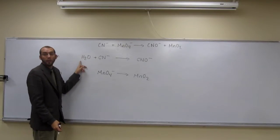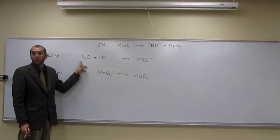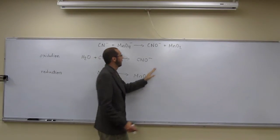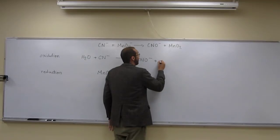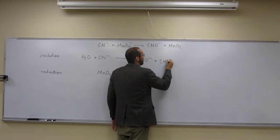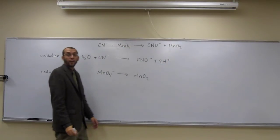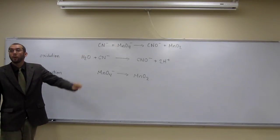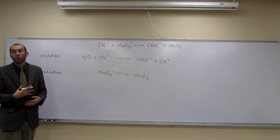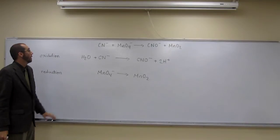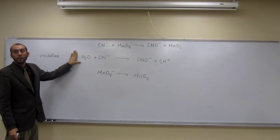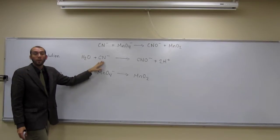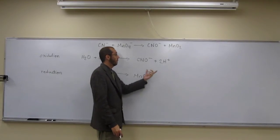Now you can see we've got too many hydrogens, so what are we going to do? Add two H⁺ — two protons. So now we've got all our atoms balanced, but we need to balance our charges. What's our total charge on this side? That's negative one. Zero minus one — add those together, that's negative one. Plus two, minus one — what do we got? Plus one.